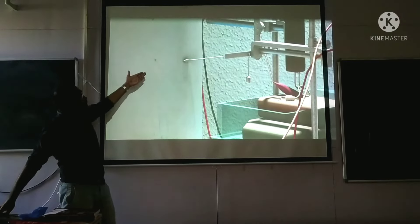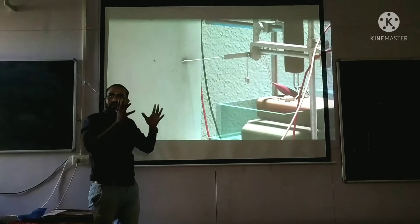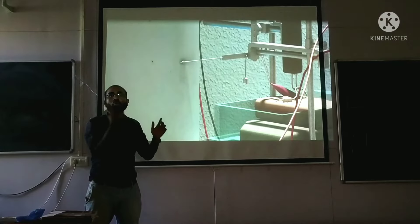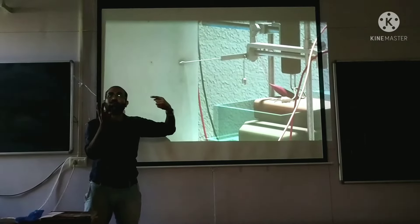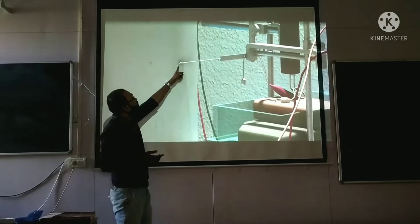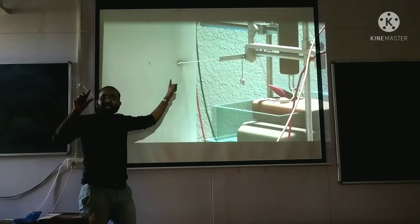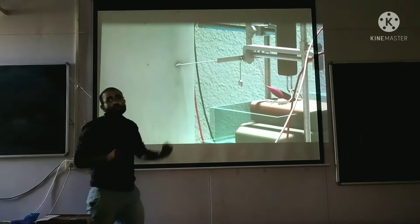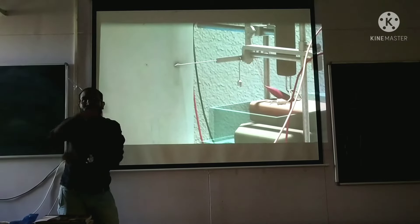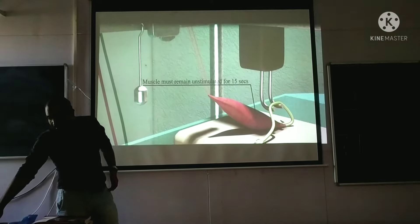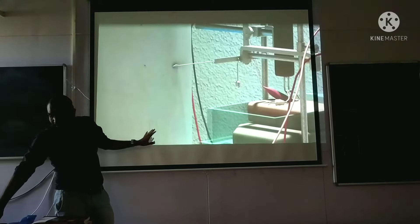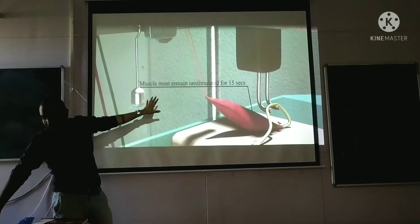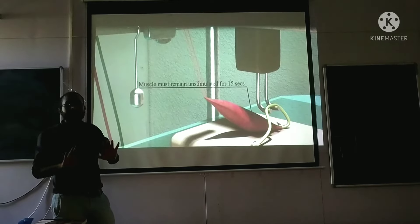At first there is no response. We keep the drum stationary — the drum is not going to move. If the drum were to move, the lever would give a marking. We keep the drum stationary and observe the response. A minimal, below-threshold stimulus is given, and we check whether the lever goes up or whether the muscle is responding.